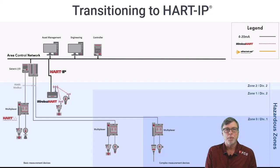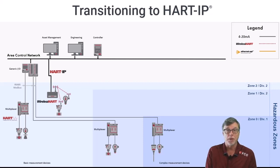For the process automation world to transform to full digital, a physical layer is required that meets the performance and safety needs of the industry while providing the flexible networking design, speed, and security that the IT world has enjoyed for many years. Ethernet APL is that physical layer.